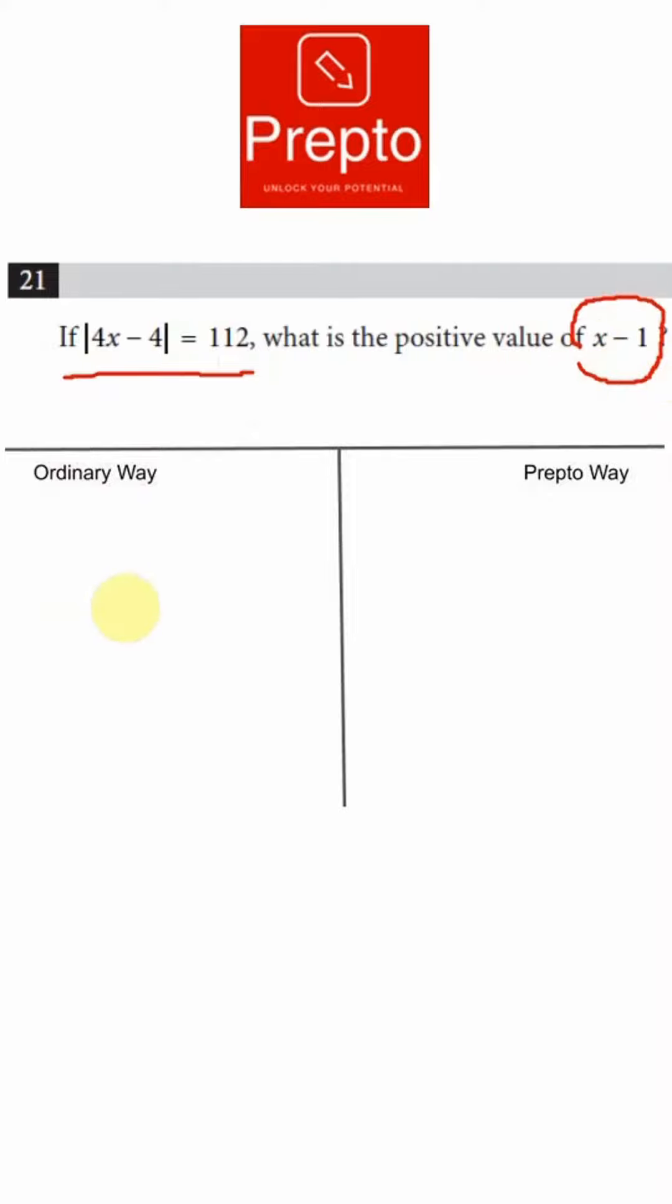So in the ordinary way, what you do is open the modulus sign first. Modulus of 4x minus 4 will always be positive, but within the mod you can have a positive number or you could have a negative number.